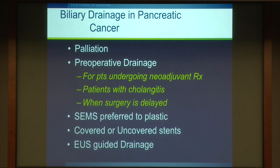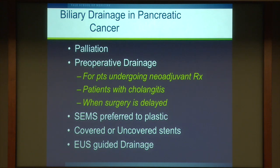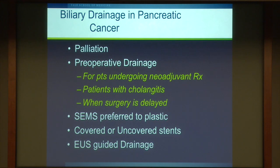In summary, for biliary drainage in pancreatic cancer: patients with metastatic, unresectable disease clearly benefit from placement of a biliary metal stent for palliation. For preoperative drainage, patients receiving neoadjuvant chemotherapy — locally advanced disease hopefully to be downstaged — and those with cholangitis need to be drained. When surgery is delayed, drainage is necessary. In general, unless the patient is moribund, self-expanding metal stents are preferred over plastic stents, with options of covered versus uncovered. EUS-guided drainage is a good backup that is still evolving and will likely become the standard of care for failed ERCP.